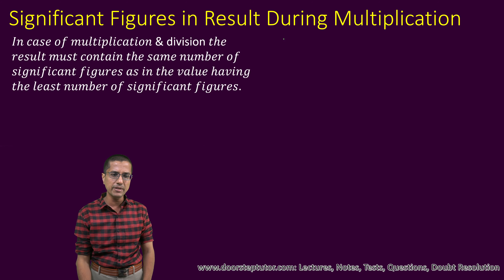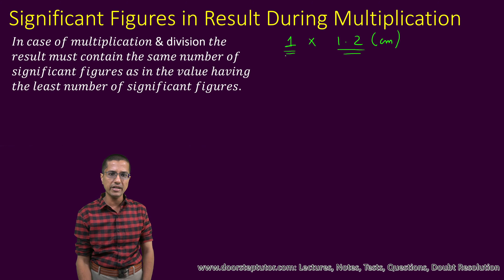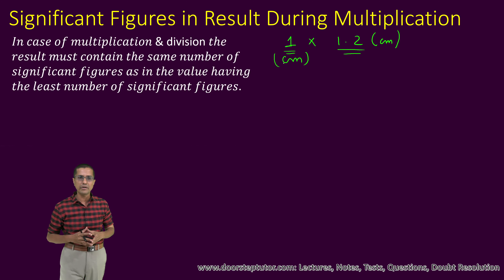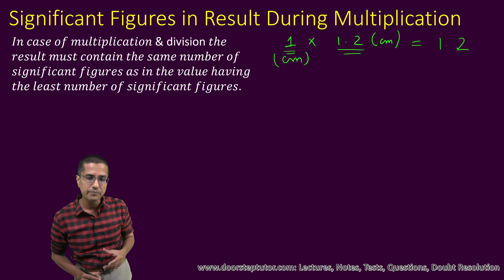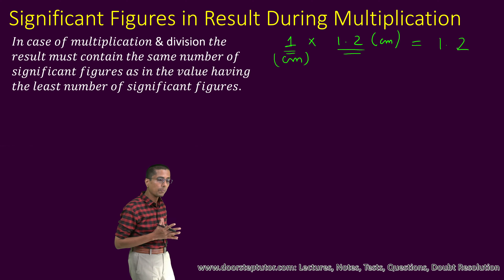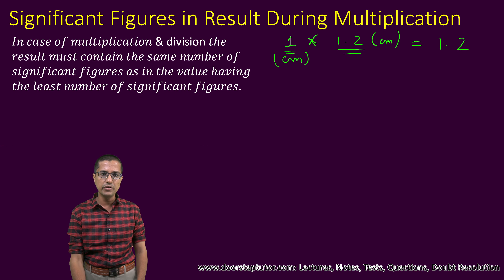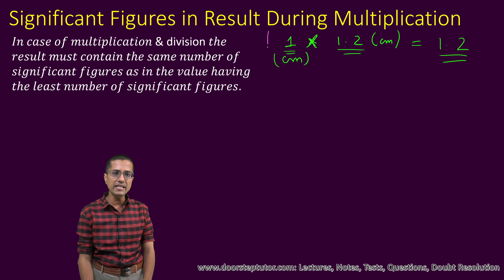Let us start with a simple example. Let us say that I am multiplying 1 with 1.2 — let's say this is centimeters, and this is a measured quantity, and this is also a measured quantity, also in centimeters. So maybe these are the two sides of a rectangle and we are trying to compute the area. The rule when doing propagation of significant figures during multiplication says that the final answer takes on the number of significant figures from the operand with the least number of significant figures.